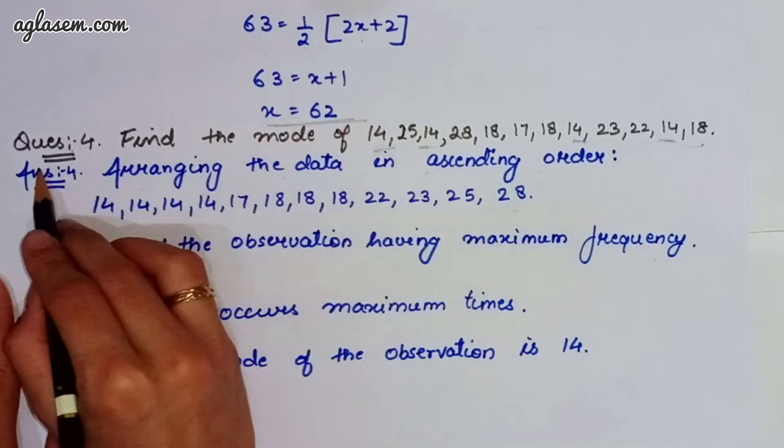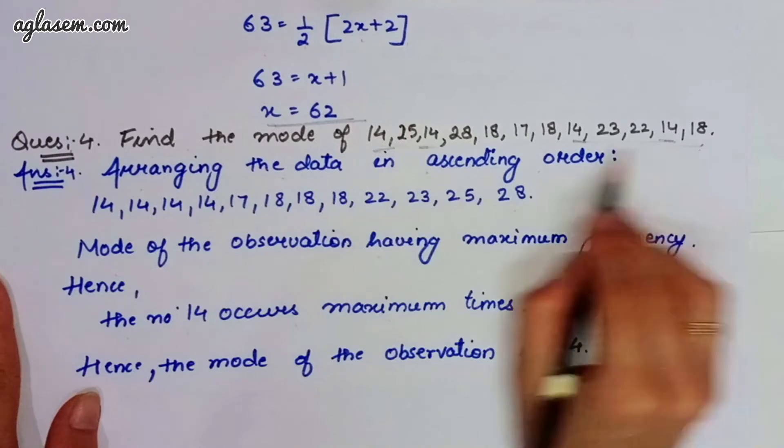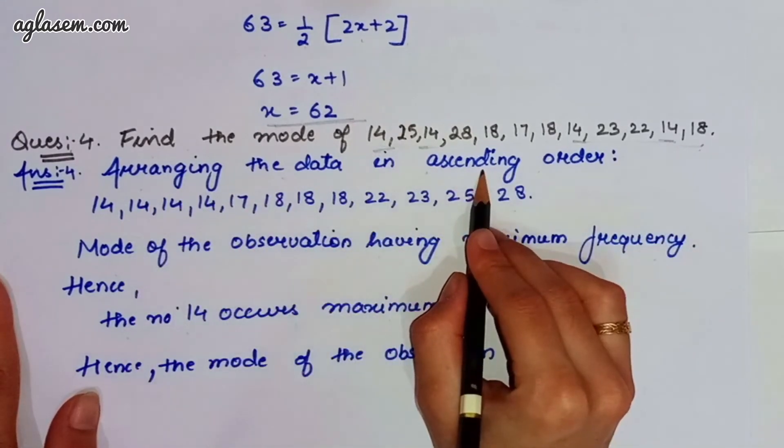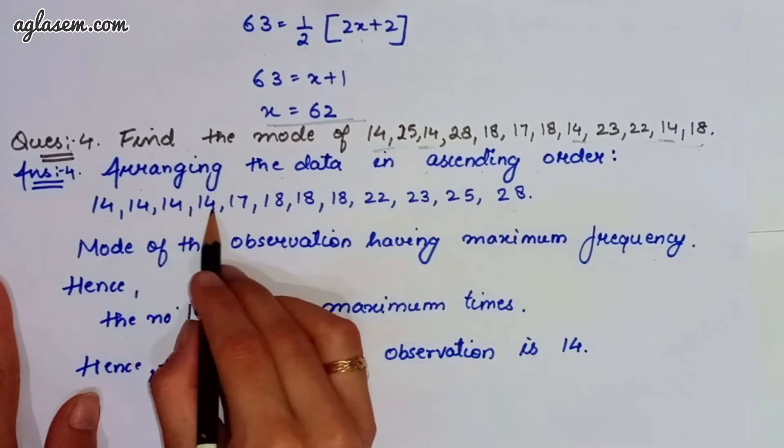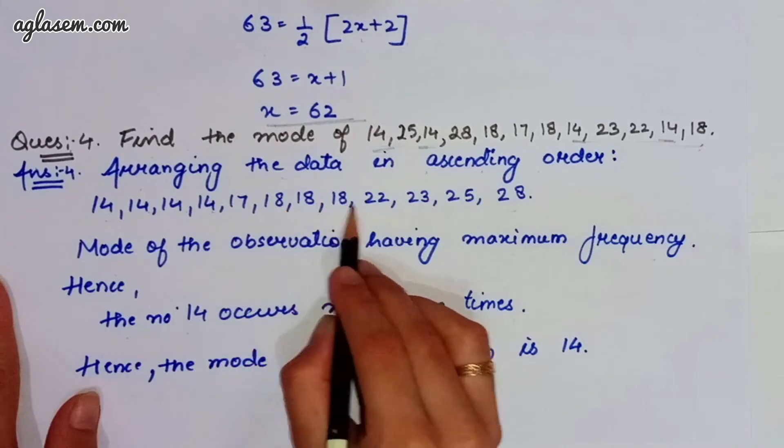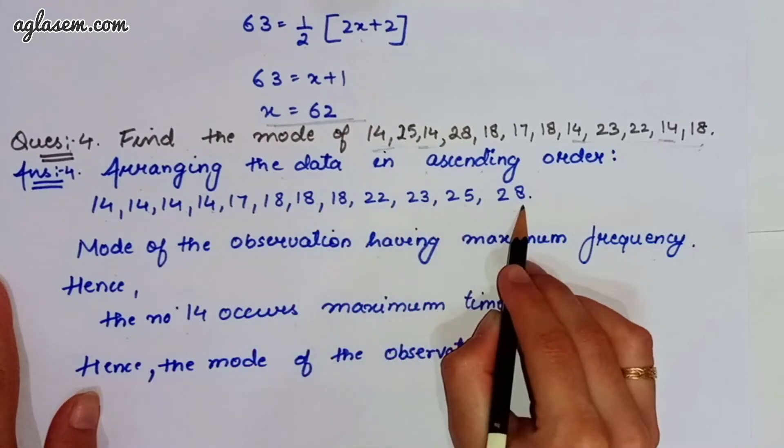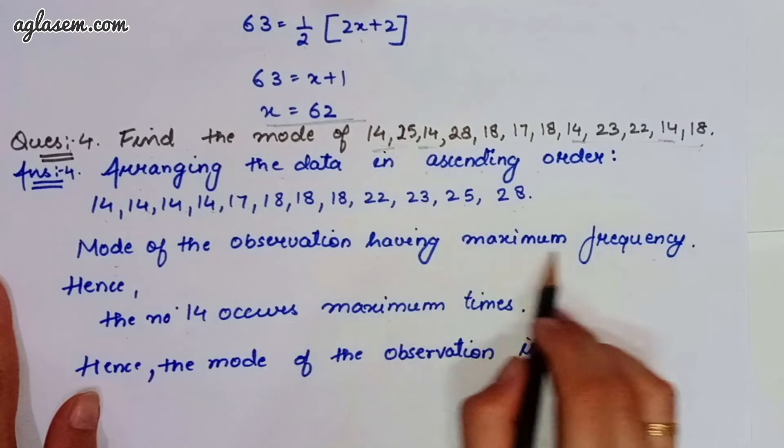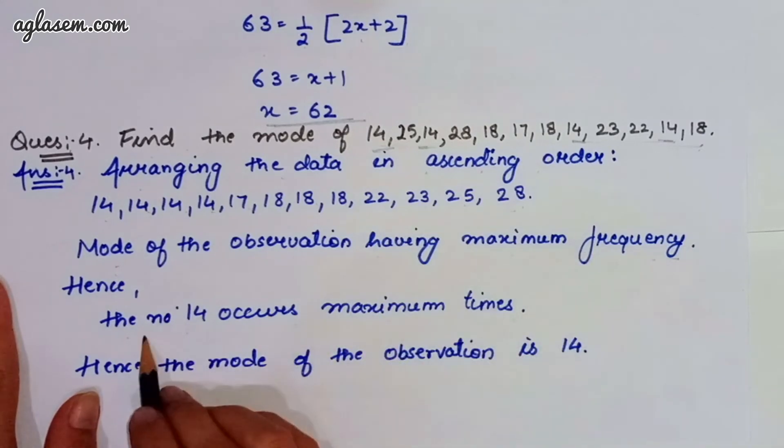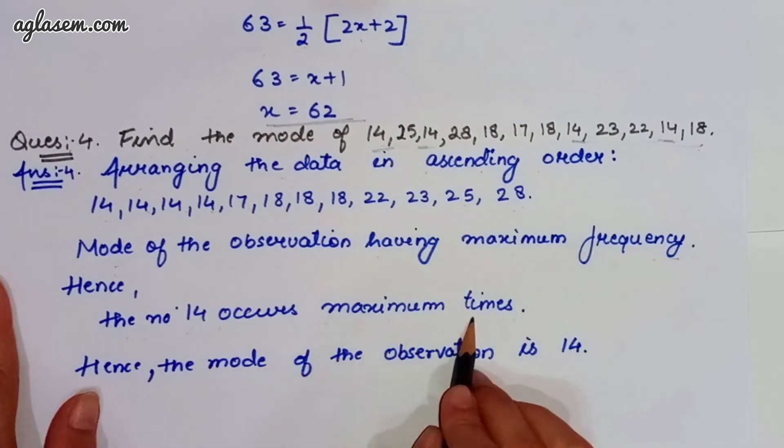Moving to our fourth question, which says, find the mode of all this. So, we have to arrange first in ascending order, that is 14, 14, 14, 14, 17, 18, 18, 18, 22, 23, 25, 28. So, mode of observation having maximum frequency. So, therefore, the number 14 occurs maximum time. So, mode of observation is 14.